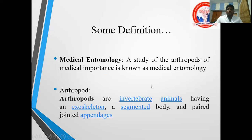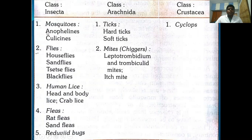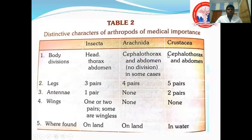Arthropods are divided into class Insecta, Arachnida, and class Crustacea. Insecta includes mosquito, flies, fleas, and bugs. Arachnida includes ticks and mites, and Crustacea includes cyclops. To differentiate them, we look at body division, legs, antenna, wings, and where these species are found.